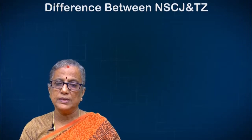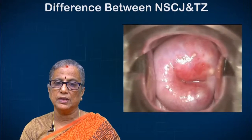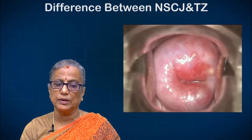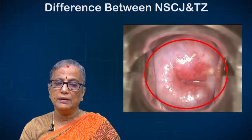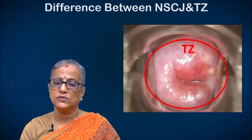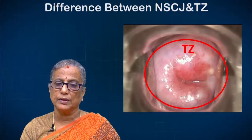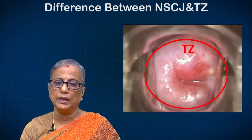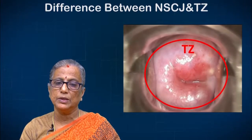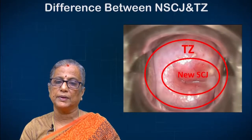The difference between the new squamocolumnar junction and the transformation zone is that the new squamocolumnar junction is the inner margin of the transformation zone. The transformation zone is the area bounded between the old squamocolumnar junction and the new squamocolumnar junction.